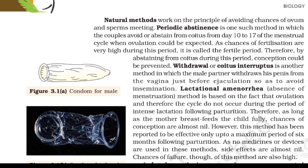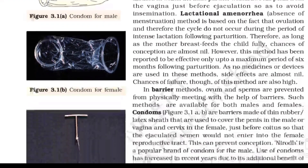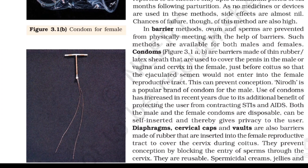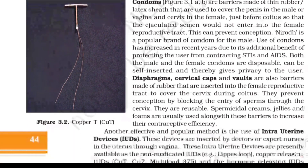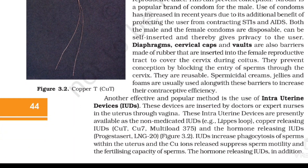You can start with the methods of contraception. Try to explain the natural method point-wise. Then explain the barrier methods. Usually, there is a hormone-releasing IUD or a copper-releasing IUD — you can try to explain these.